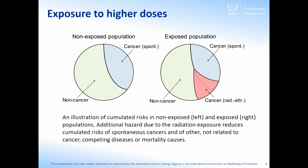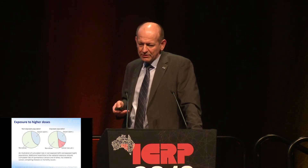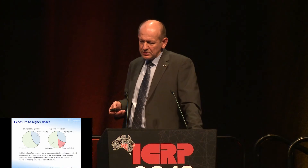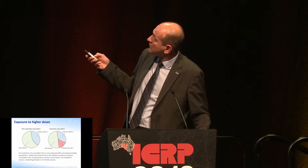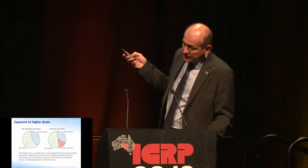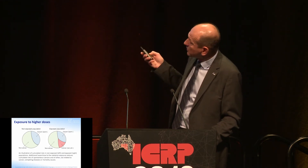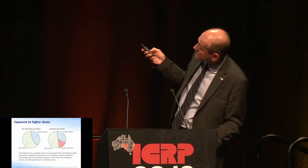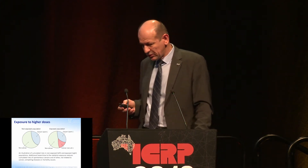As one example, consider high-dose exposure where doses already affect survival chances and create significant hazard. In the unexposed population you have some spontaneous cancer outcomes and some non-cancer outcomes; but exposure creates additional hazard, which reduces the probability for manifestation of spontaneous cancer — the baseline — and the non-cancer outcomes, which are competing risks for population survival.